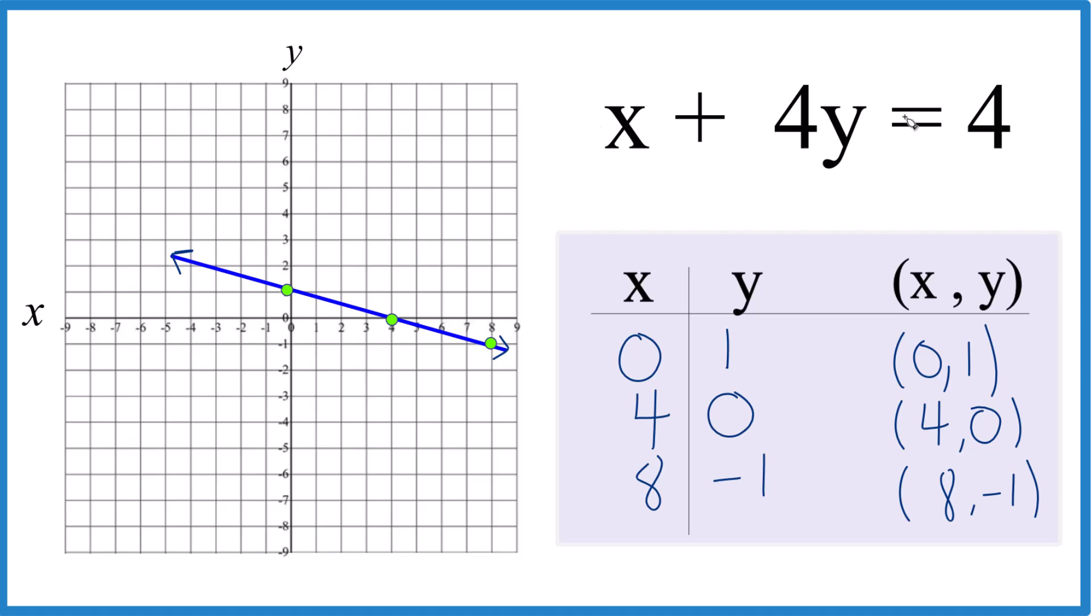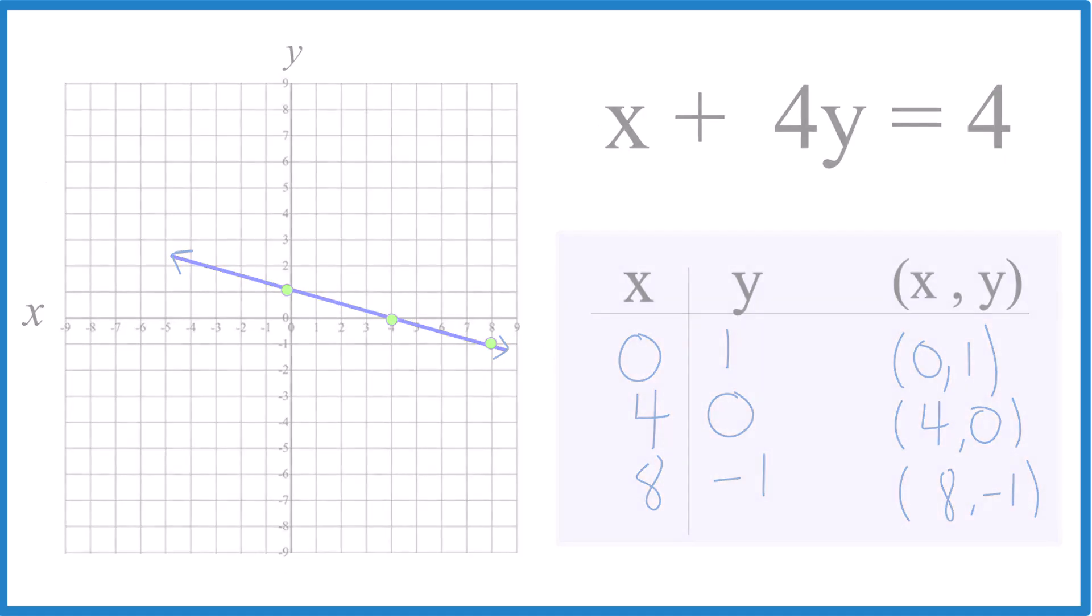Again, you could use slope-intercept form, you get the exact same line. And these values like x is zero or y is zero or x is 8, I just made those up so I get whole numbers and that the points would fit on our graph here. It's Dr. B. Thanks for watching.